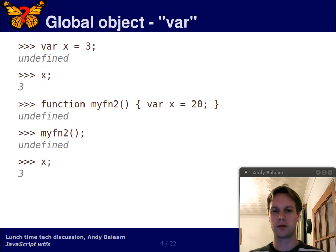Why? Well, because of that little word var. So if you look at the definition of myfun2, before we set x to 20 we put the word var. What that means is this variable lives inside this function scope and doesn't affect anything outside it.